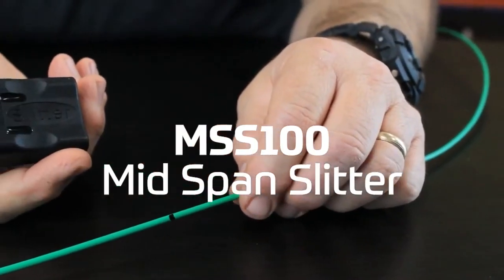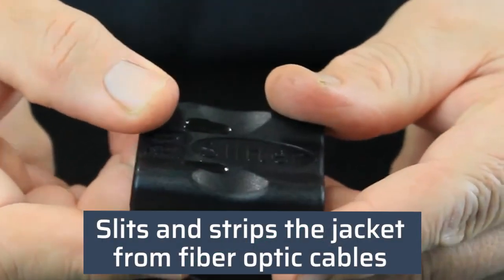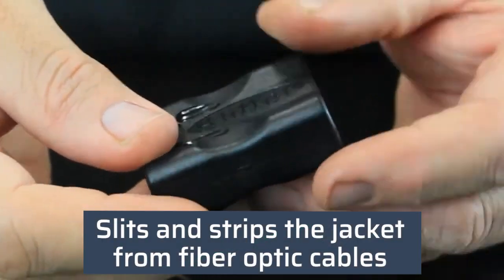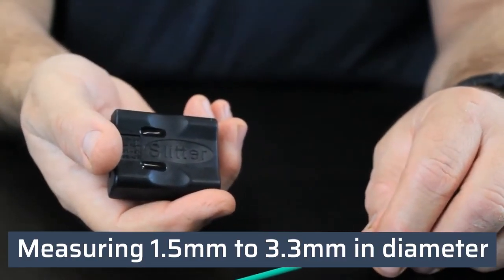The Tempo Communications MSS100 mid-span slitter is capable of making a mid-span slit and stripping the jacket from fiber optic cables measuring 1.5 millimeters to 3.3 millimeters in diameter.